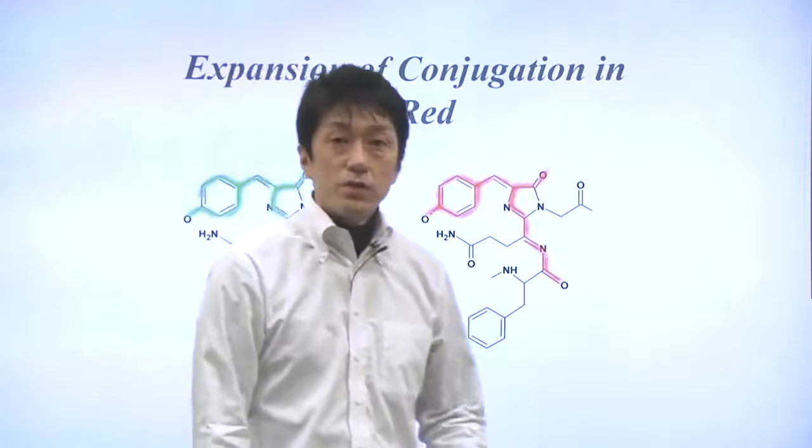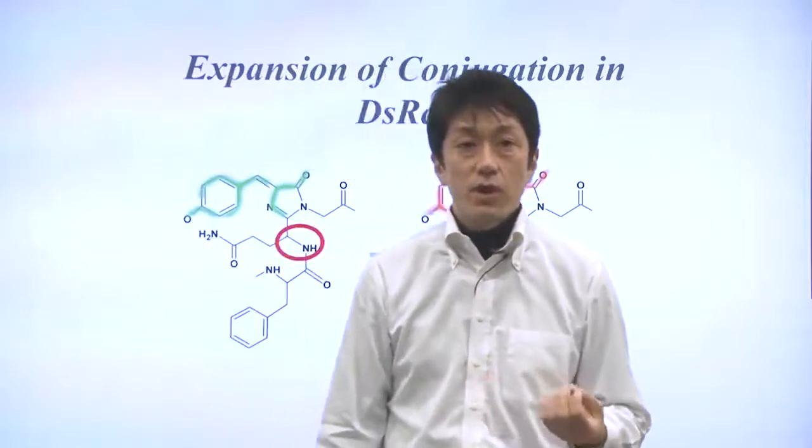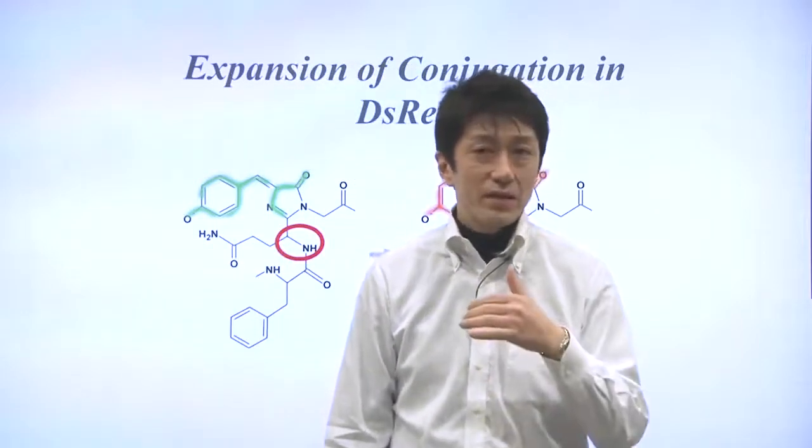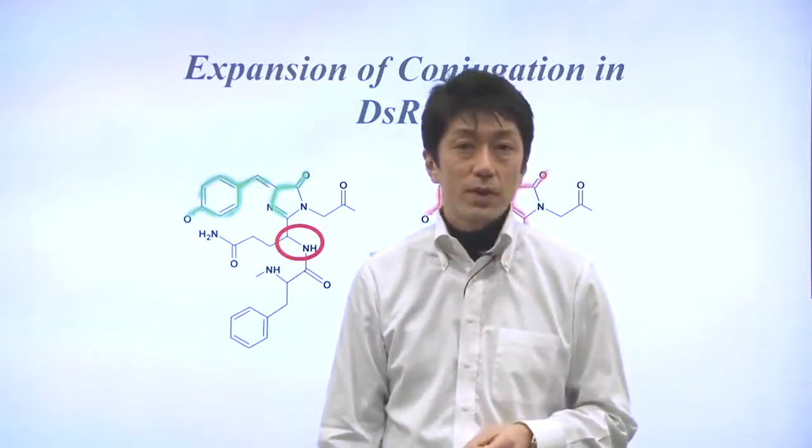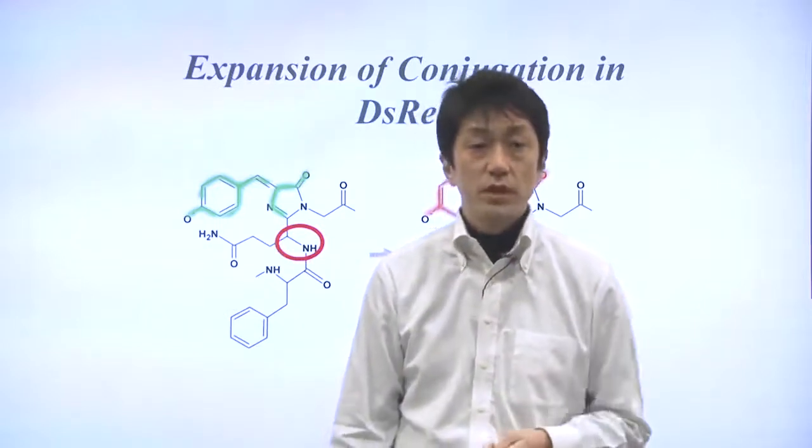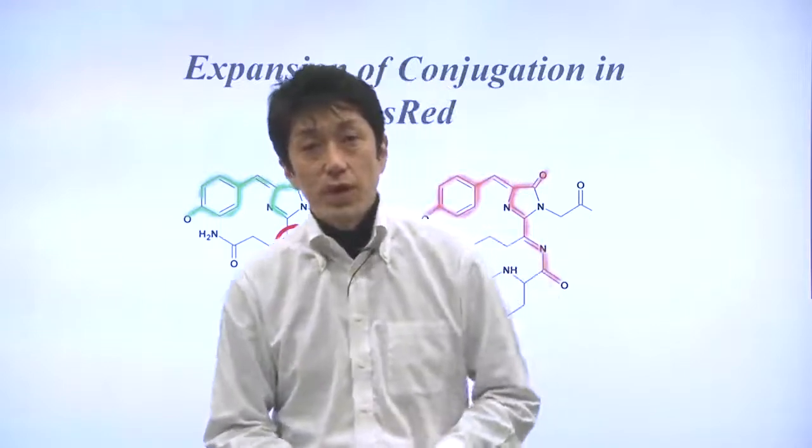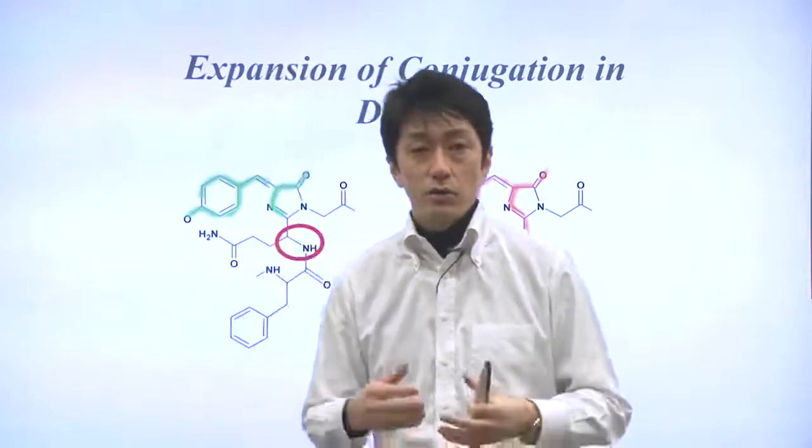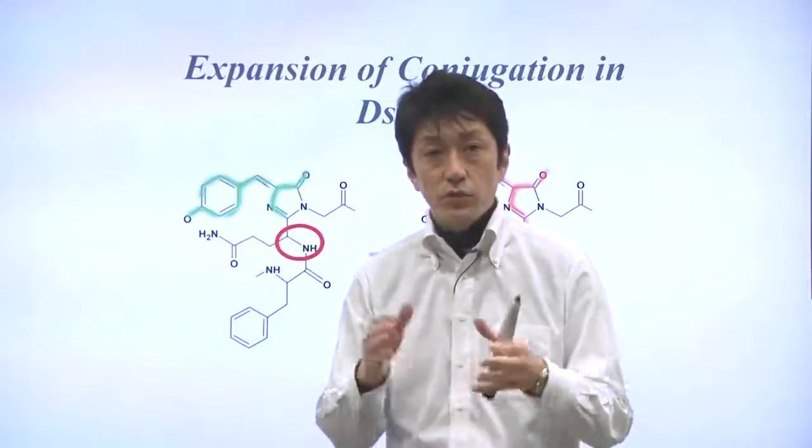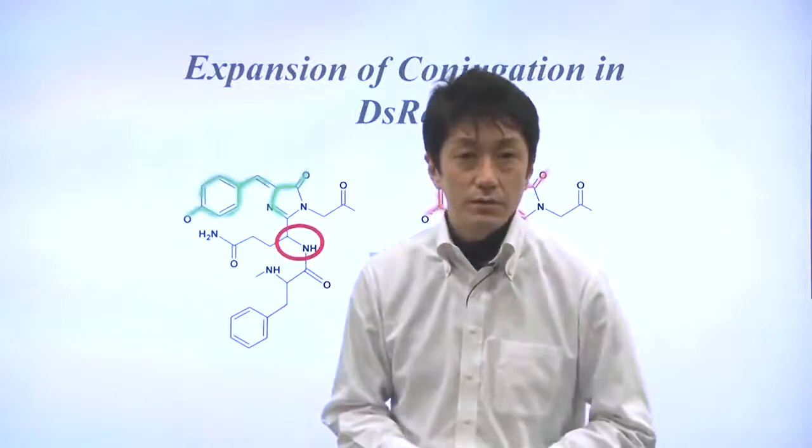The red fluorescent protein DS-RED has spectral properties that are ideal for dual-color experiments with green fluorescent protein. In the next video clip, I will show you how you can use two fluorescent proteins with different colors.